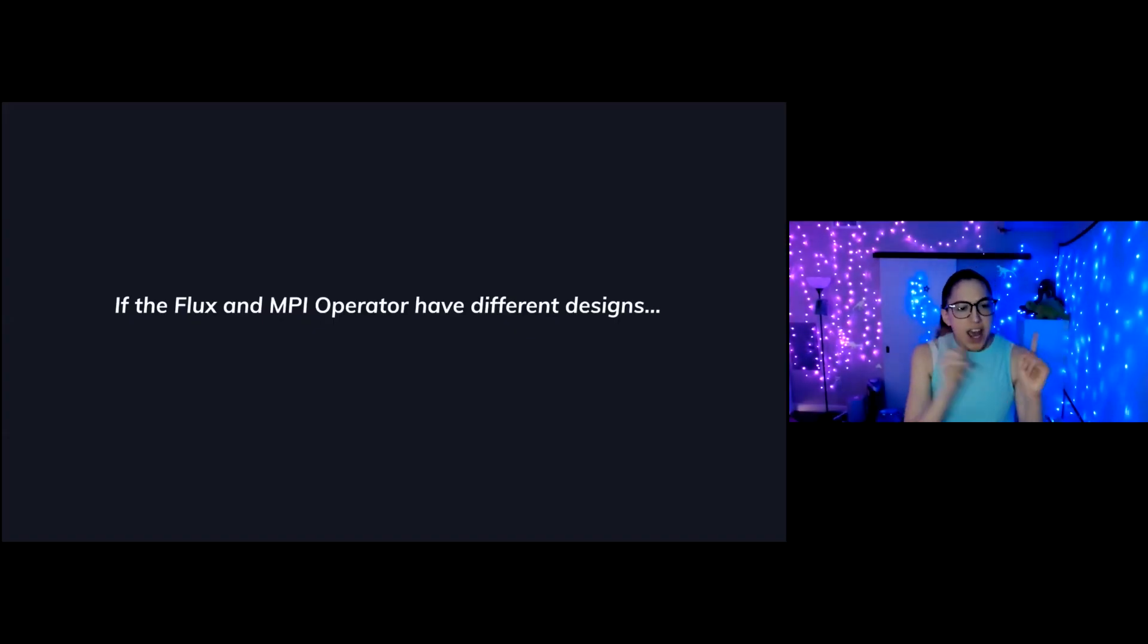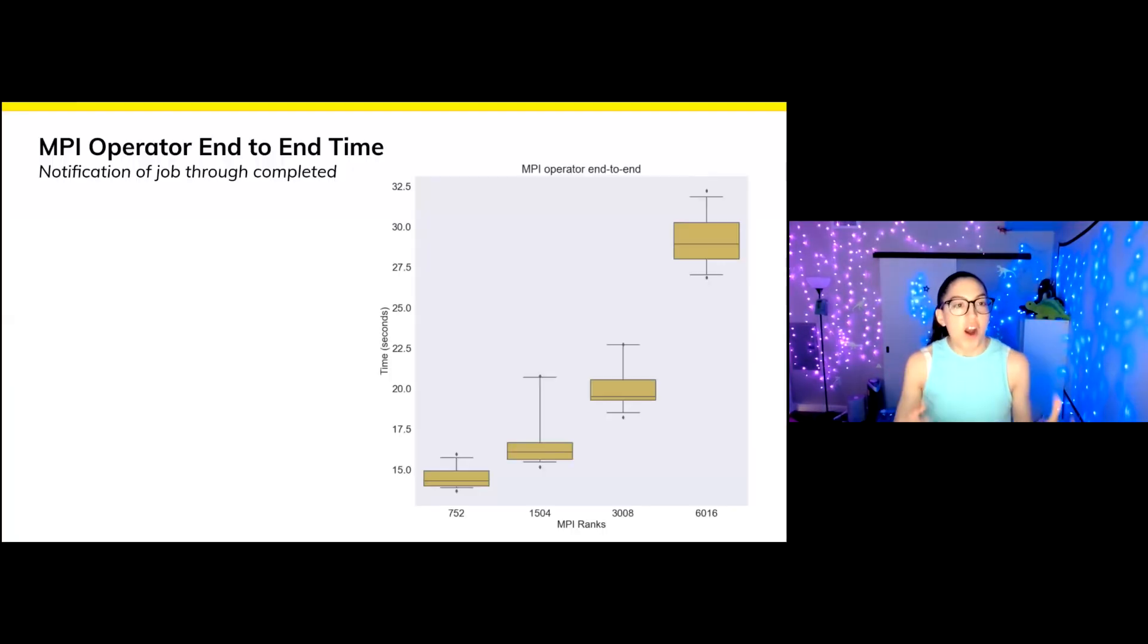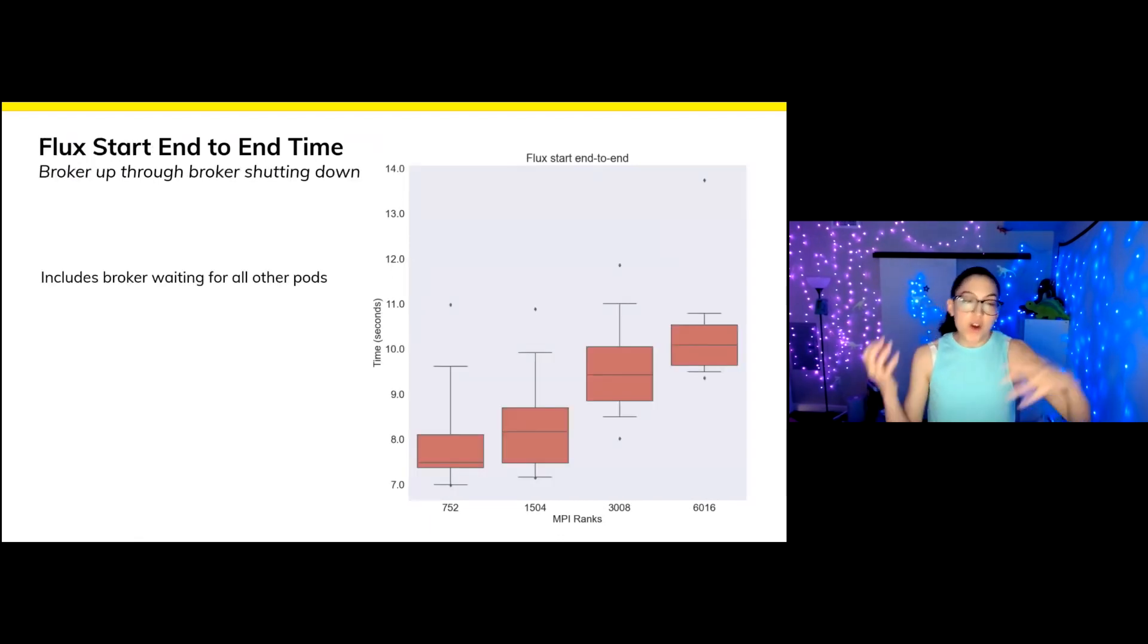So next question from the sun god. If the flux and MPI operator have different designs, how efficient is each operator setup? So because we are comparing apples and oranges here, we need to look at them separately. Starting with the MPI operator, here's the end-to-end time. So this is the notification of the job through the timestamp when it's completed. This I must note is when the pods are ready to go. There's absolutely no waiting for pods here. And it does not include the LAMMPS run. And what you see is that there's a twofold increase in time from size eight to size 64. Now the similar thing we could compare to in flux is flux start. This is from when the broker comes to life through when it shuts down. So this, I need to point out, includes the broker waiting for all the other pods. We don't know when the broker is going to come up relative to the other pods. It also does not include the LAMMPS run. And it looks pretty okay to me.